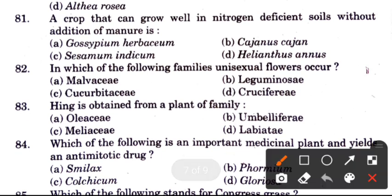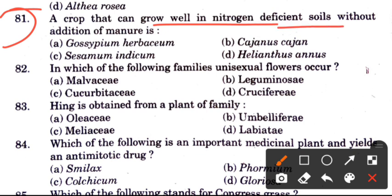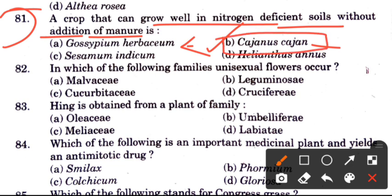Question 81: A crop that can grow well in nitrogen-deficient soil without additional manure — options are Gauzi, Cajanus cajan, Sesamum indicum, and Helianthus annuus. The answer is B, Cajanus cajan, which is a crop that can grow without added nitrogen.